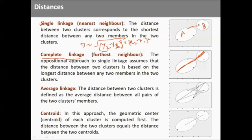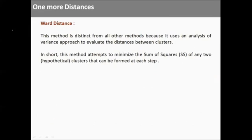The third method calculates all possible distances between points across the two clusters — essentially the Cartesian product of the two clusters — and finds the average distance. The fourth approach is centroid distance, where we first find the center of each cluster and then calculate the distance between those centroids. The fifth method is theoretically distinct from all others because it uses an analysis of variance — ANOVA — approach to evaluate distances between clusters.